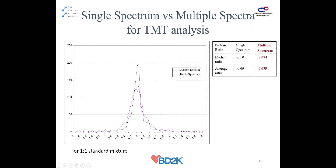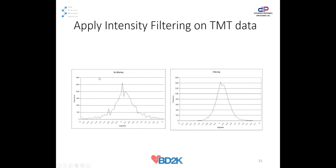This shows the log ratio and the frequency of reporter ion measurement. The expected ratio is zero as it's a log ratio, and with multiple spectra it's closer to zero. Another important parameter is the intensity threshold. Without the intensity threshold, each ratio distribution is pretty wide — the expected value is zero — but with the intensity threshold, you can get a much better, tighter result.